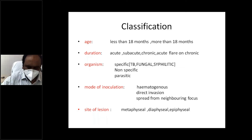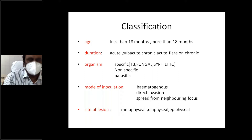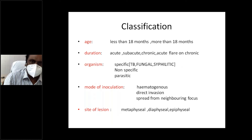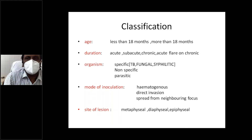Classification of osteomyelitis is very important for prognostic and management aspects and to understand the disease. This classification is divided depending on the age, depending on the duration, depending on the organism that is infecting, the method of inoculation of that organism, and the type of bone involved.